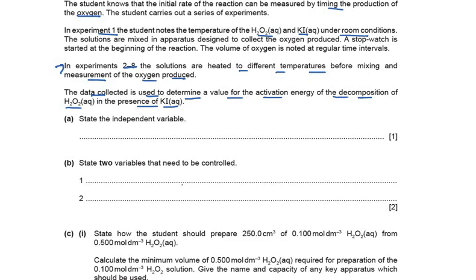The first sub-question asks: state the independent variable. The independent variable is what we are changing in the experiment. Here we are changing the temperature and measuring the volume of oxygen. So temperature is the independent variable — the factor which we change.